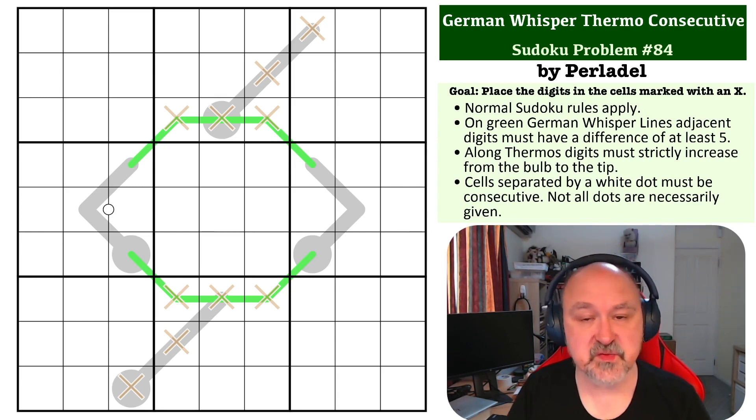The rules: there are German Whisper lines which are the green lines. On German Whisper lines, adjacent digits must have a difference of five or more. There are thermos - along thermos, digits must strictly increase from the bulb to the tip. The next digit along from the bulb cannot stay the same; they must increase. And cells separated by the white dot must be consecutive.